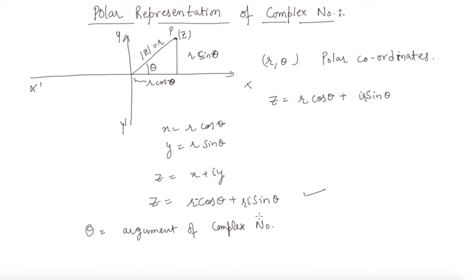The principal argument of a complex number always lies between pi to minus pi. You need to measure the angle and then you will tell what is the argument of a complex number.